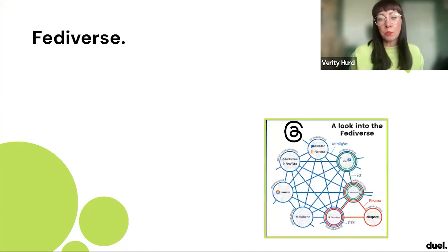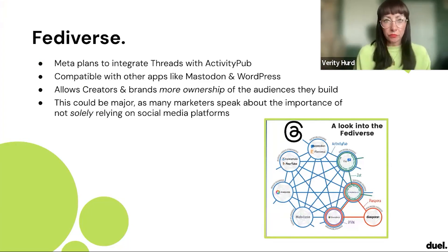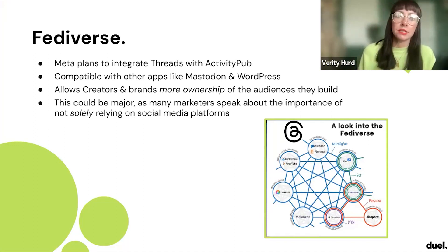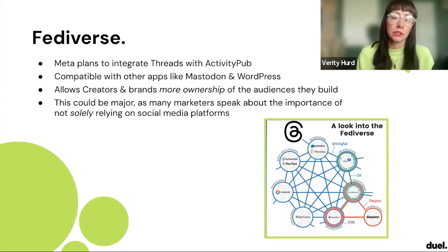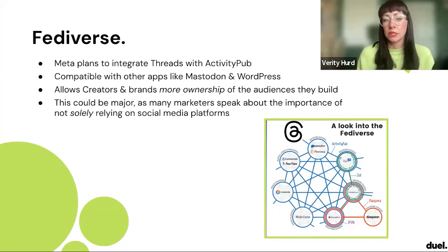The Fediverse — a combination of 'federal' and 'universe' — is the idea of a group of decentralized and independently run servers or platforms operating in an interconnected space. Threads is being built so that it works within this multiverse using protocols called ActivityPub, which essentially allows Threads to work with other decentralized social media platforms. If you're familiar with something like Mastodon, this will be a quite familiar concept.